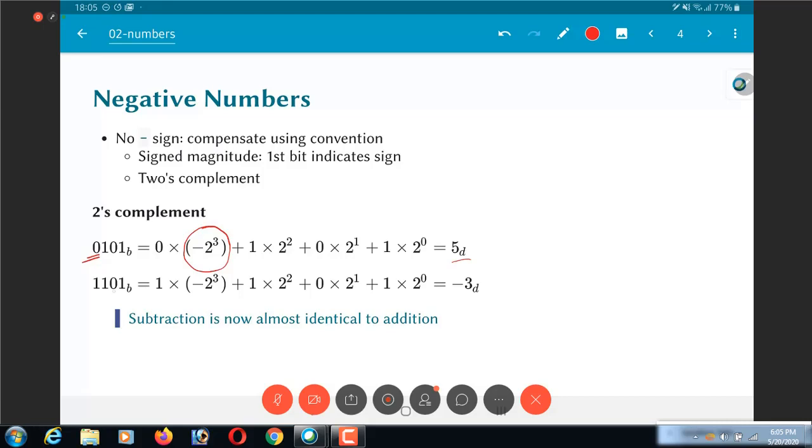But what if it was 1101? Now that 1 times -2^3 essentially ensures—because 2^3 is guaranteed to be greater than whatever sum you can come up with after that—the final result is negative. In this case, 1 times -2^3 plus the rest gives us -3 as the value. Remember, either way the representation of the number is still 0101 or 1101. It's just that the convention I follow now allows me to interpret it as a 2's complement number. So when I say 2's complement format, all that I mean is there's a binary representation of numbers, and if the number you're trying to represent is negative, you'll use this format where the most significant bit is set as 1, and then figure out what the rest of the bits should be so the magnitude turns out correct.